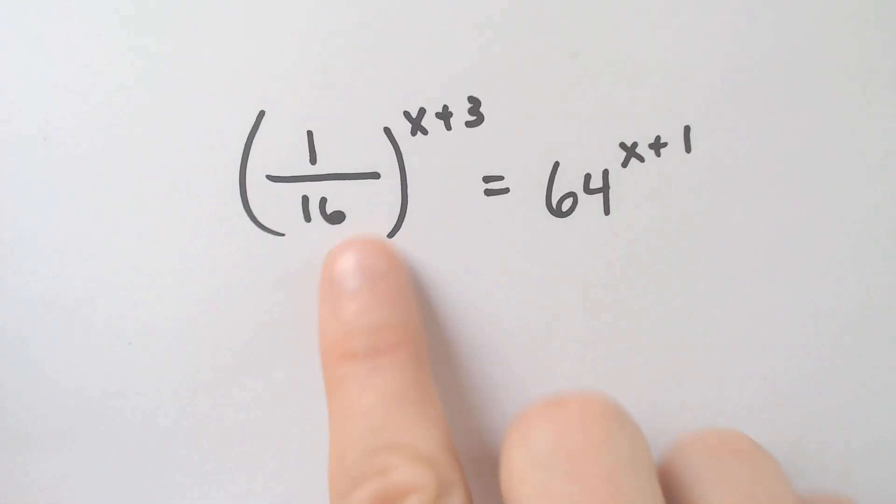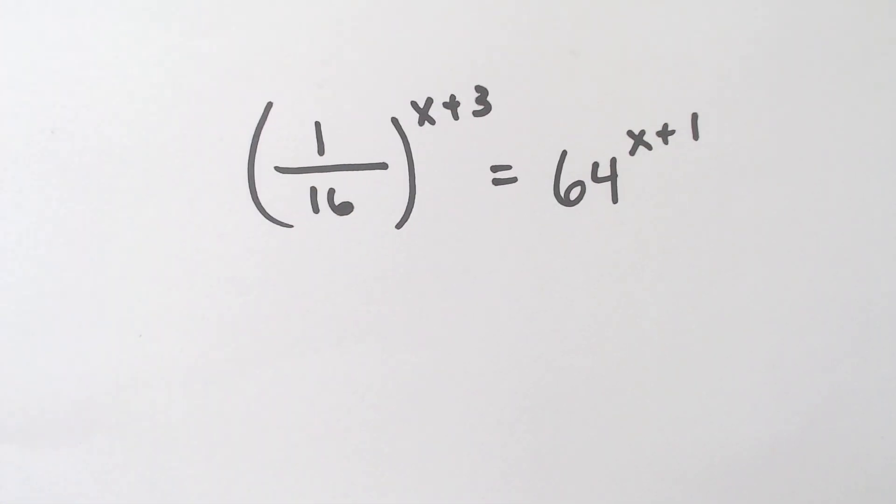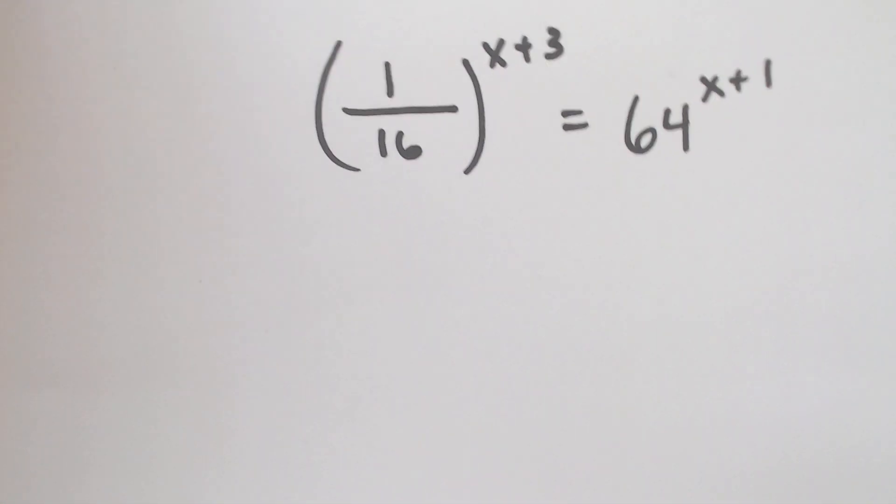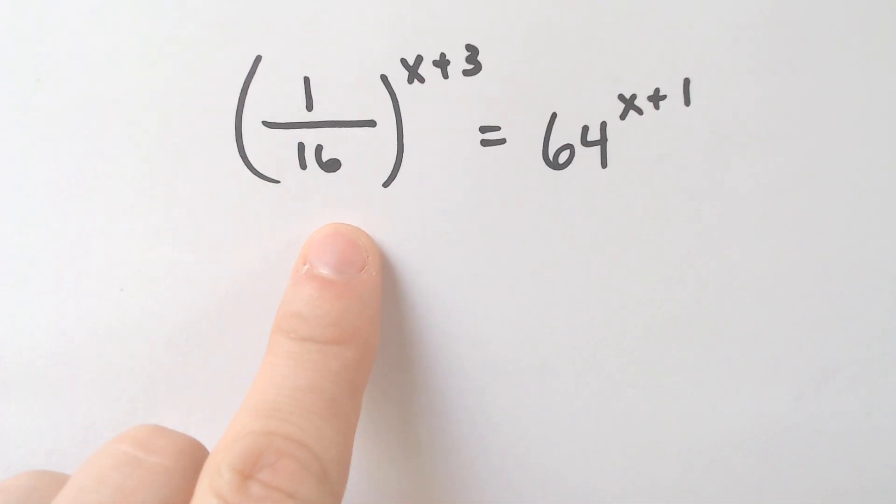Next one and the last one. A lot of times you will see a fraction. A fraction is nothing to freak out on these at all. Just think of the 16 and the 64. And think, what number could I raise and make the 16 and 64? And you actually have two options in this case. You could make it a 2 or a 4.